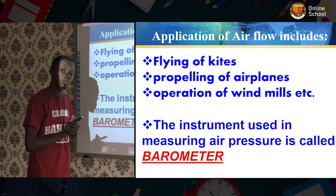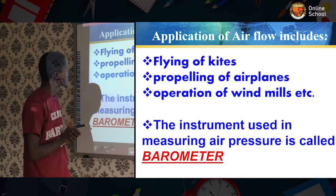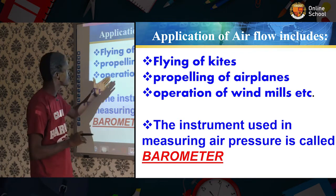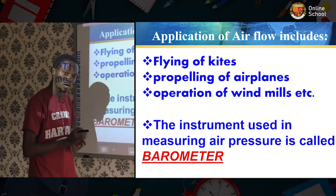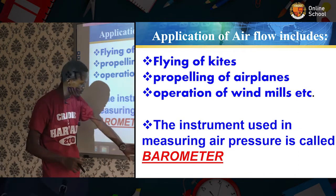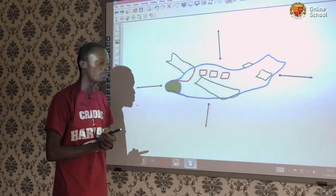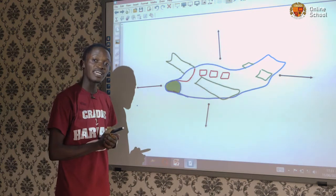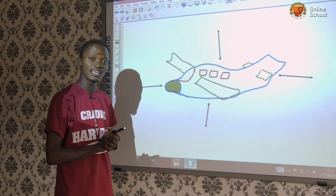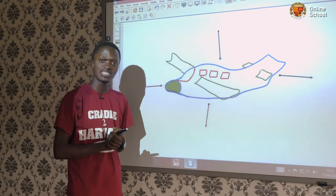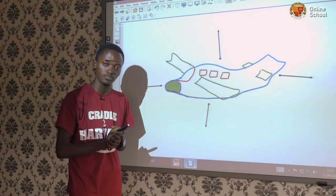Applications of airflow include flying of kites, propelling of airplanes, and operation of windmills. Now, the picture I have here is a picture of an airplane. Every object that is suspended or moves in air has four forces applying on it — two vertical and two horizontal forces.